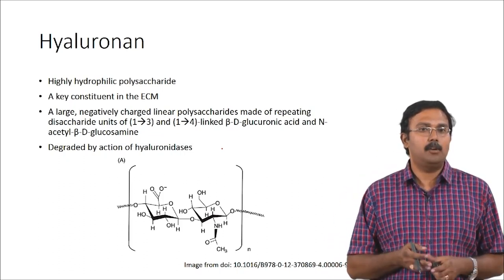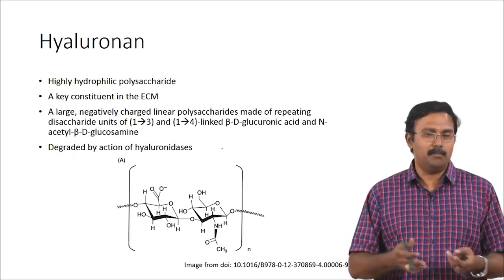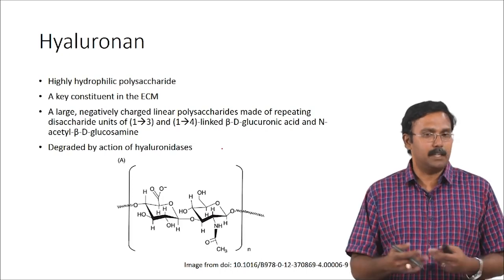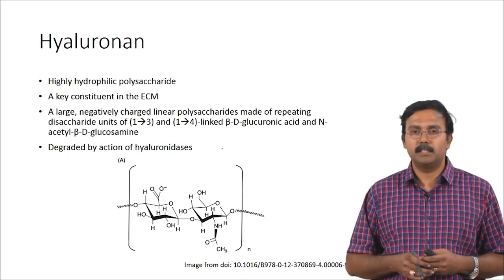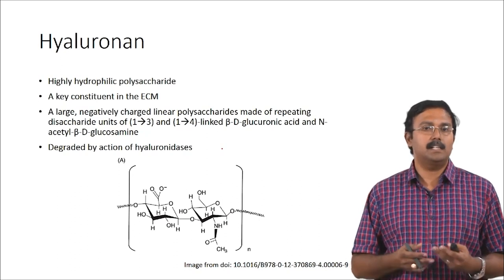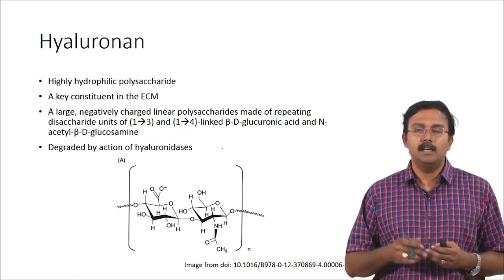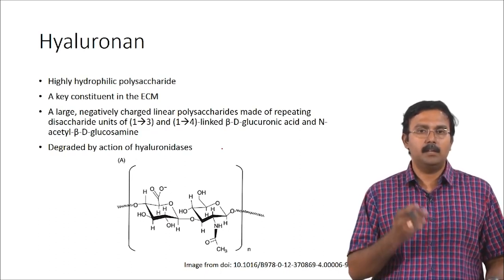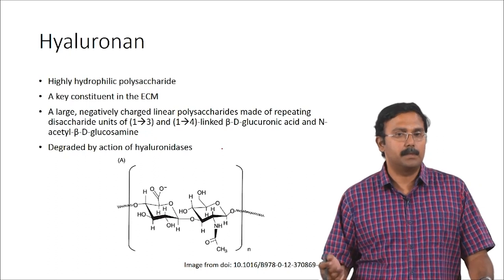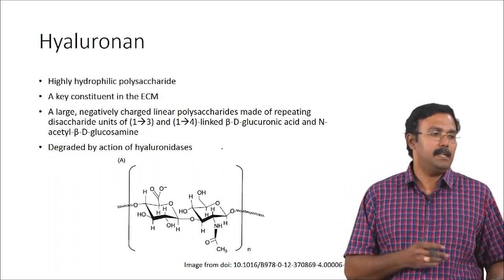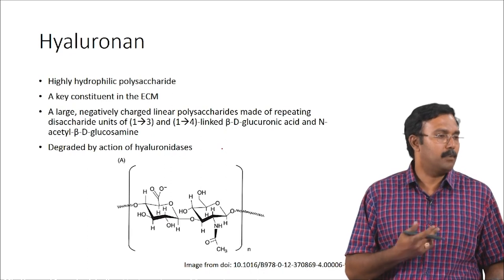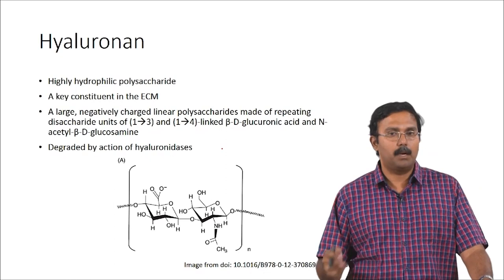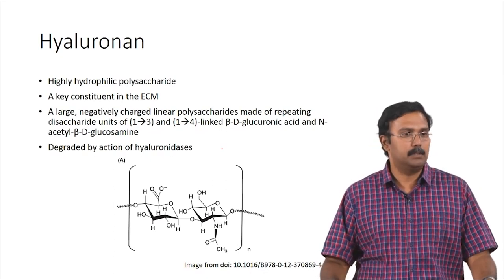Hyaluronon is a component — a key component in your ECM — and has a lot of biological functionality. So it makes sense to try to use it for tissue engineering applications. It is a large negatively charged linear polysaccharide made of repeating disaccharide units containing glucuronic acid and N-acetyl glucosamine. This can be degraded in your body by the action of hyaluronidase, and because of this it is degradable — not a problem for any tissue engineering application.